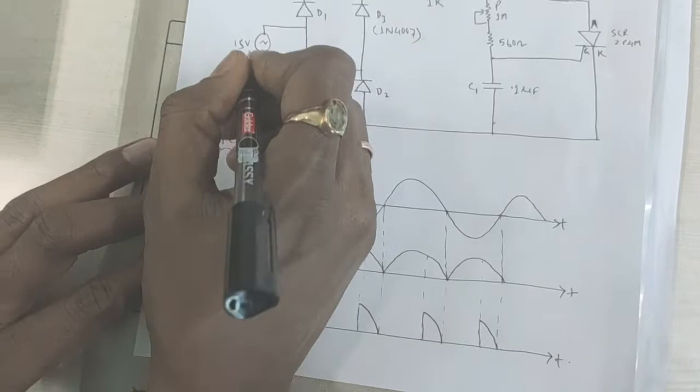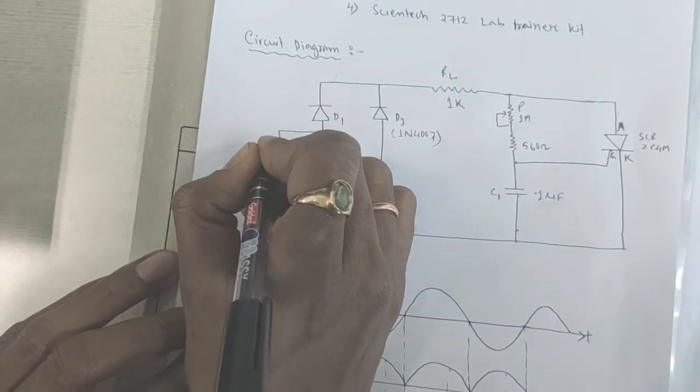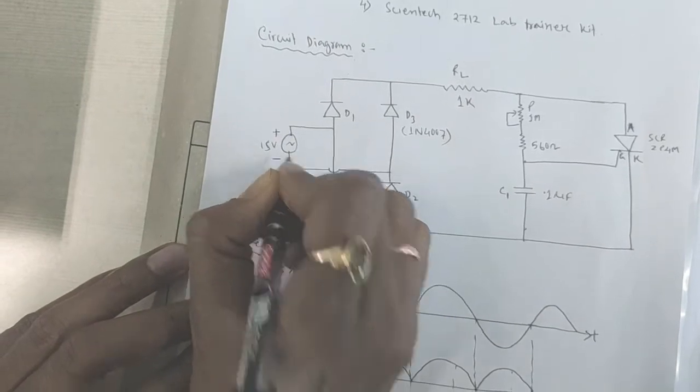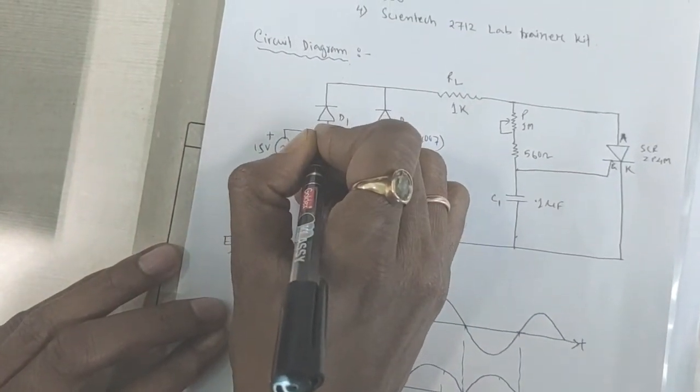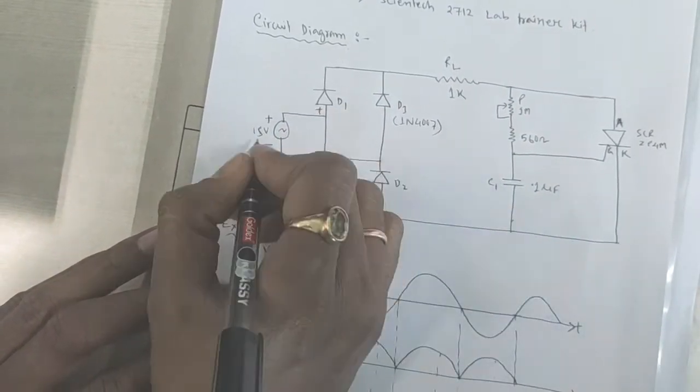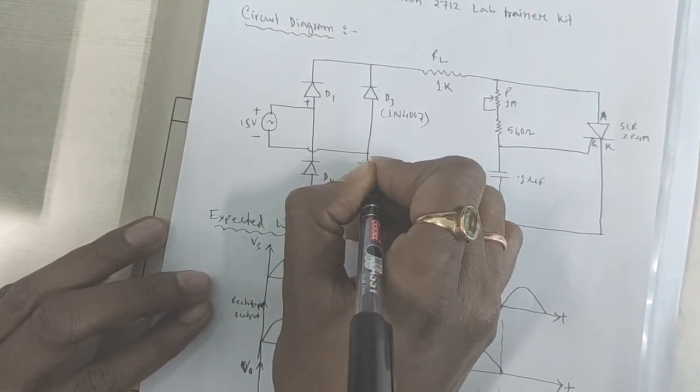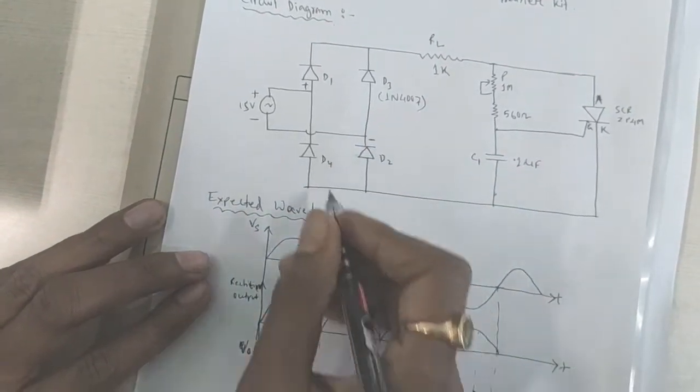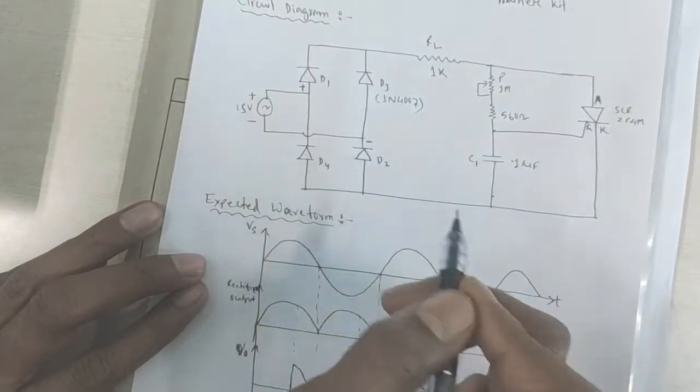So, first of all for the positive half cycle. For the positive half cycle, this one will be positive and this one will be negative. Then a positive voltage will be appeared at the anode of D1 and the negative voltage will be appeared at the cathode of D2 here.